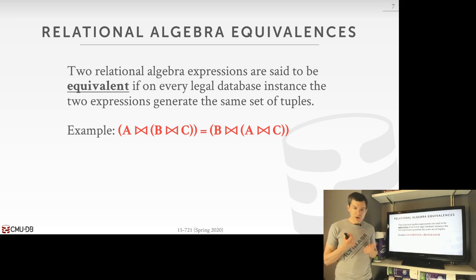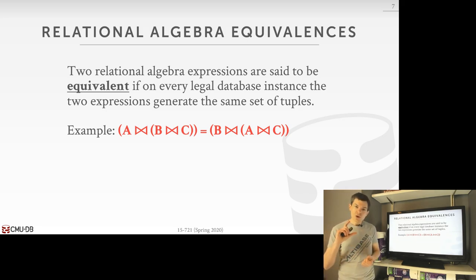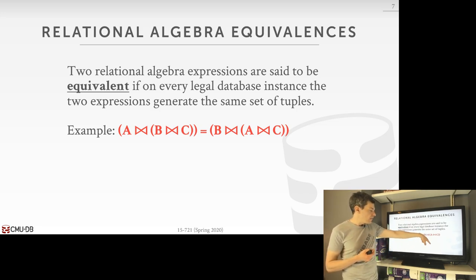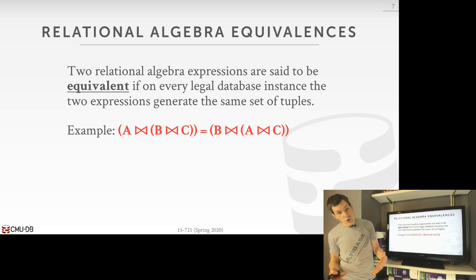Another important aspect relies on relational algebra equivalencies. Since we know the commutativity and associativity properties of relational algebra expressions, we can define rules that allow transformations of the query plan such that the end result is equivalent to the original. For natural joins between tables A, B, and C, joining B and C first then joining with A is equivalent to joining A and C first then joining B — because inner joins have the commutativity property, so we can reorder them any way we want.